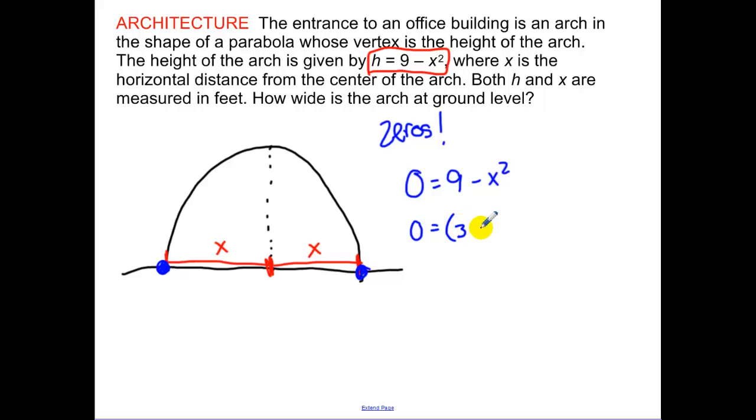We factor. Then we set three minus x equal to zero. Three plus x equal to zero.